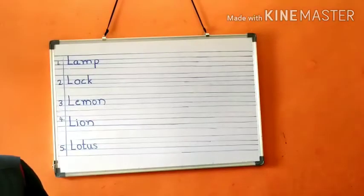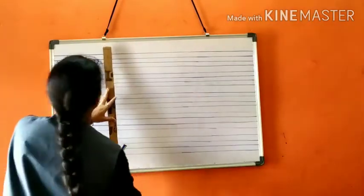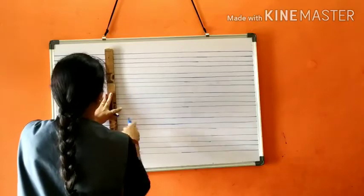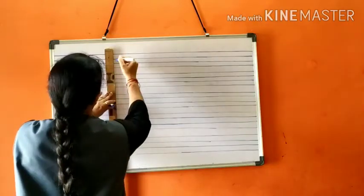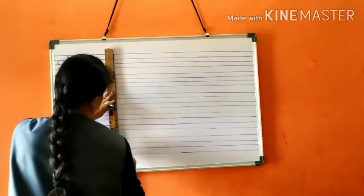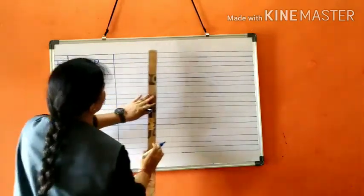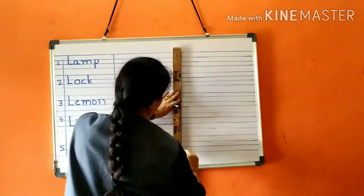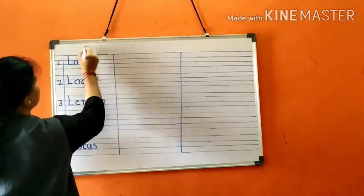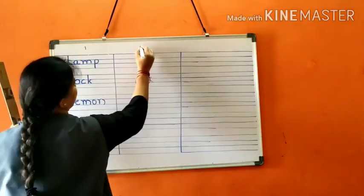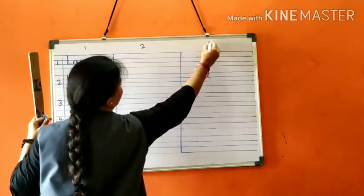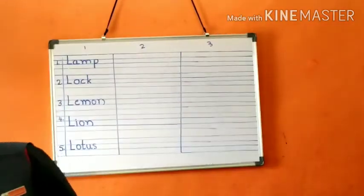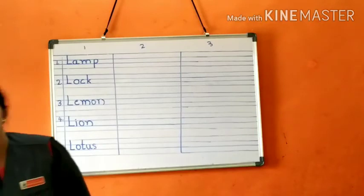Children, write these spellings two pages. In one page, you write three times children. Okay? See you in next class. Okay children, bye.